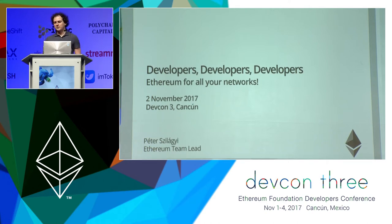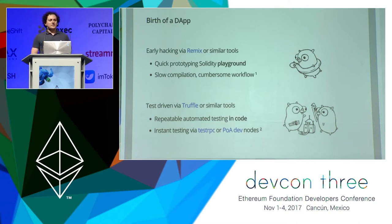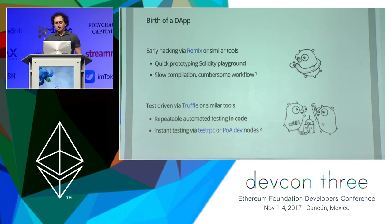My talk will be about one such tool that we wrote. But before we dive in, let's see what the actual pain points are. Usually when developers approach Ethereum for the first time, they start playing around with Remix, this browser Solidity playground. They get the hang of Solidity, start prototyping their contracts. Unfortunately, quite fast they realize that developing in a web browser is cumbersome, so they switch to more sophisticated tools such as Truffle, which can do automated repeatable testing aided by proof-of-authority chains or instant transactions.